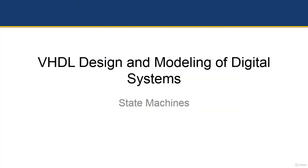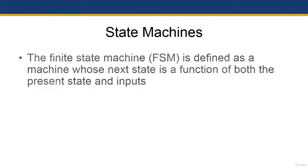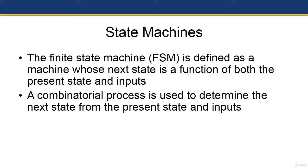Welcome to the VHDL design and modeling of digital systems course — state machines. A finite state machine, or FSM, is defined as a machine whose next state is a function of both the present state and inputs. When we apply the two-process method, a combinatorial process is used to determine the next state from the present state and inputs.